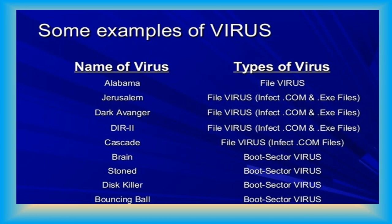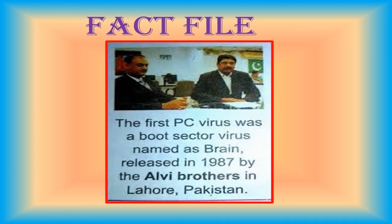Some examples of virus: Dark Avenger, DIR2, and Cascade are program file viruses which infect the executable files, whereas Stoned, Brain, and Disk Killer are boot sector viruses which infect the boot sector of a hard drive. Fact File: The first PC virus was a boot sector virus named Brain. It was released in 1987.